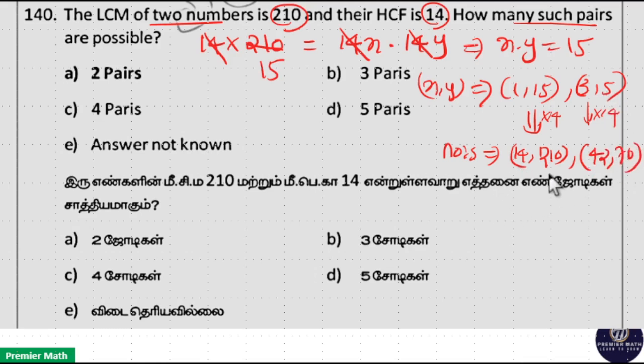So you cannot take 210 and 14 and 14 and 210 as 2 pairs. 14 and 210 means 2 numbers with 1 pair. Here 42 and 70 means 2 numbers with 1 pair. So only 2 pairs are possible. Option A is your answer.